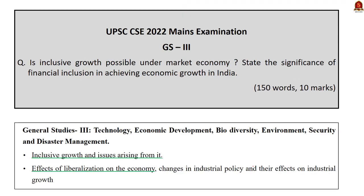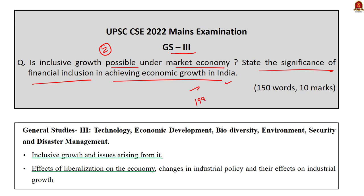Moving on to question number two in GS Paper 3: 'Is inclusive growth possible under market economy? State the significance of financial inclusion in achieving economic growth in India.' India adopted LPG reforms in 1991 and has become more market oriented. Due to this, inequality in India is on the rise — the rich are getting richer and the poor are getting poorer. It is due to this that UPSC asked this question. This is an opinion-based question — you can say yes, inclusive growth is possible under market economy, or no, market economy is antithetical to inclusive growth, and give supporting arguments either way.